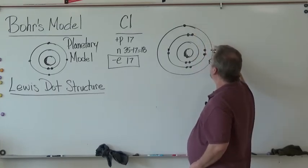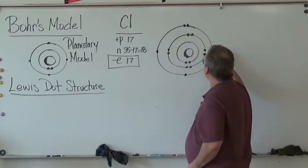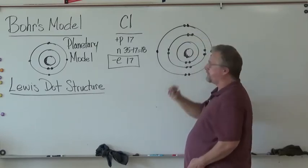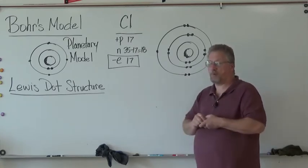11, 12, 13, 14, 15, 16, 17. So there's Bohr's model for chlorine.